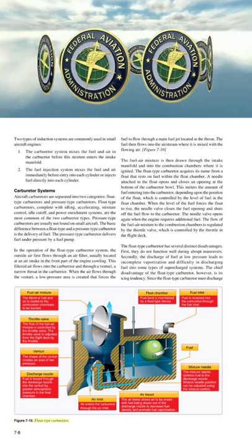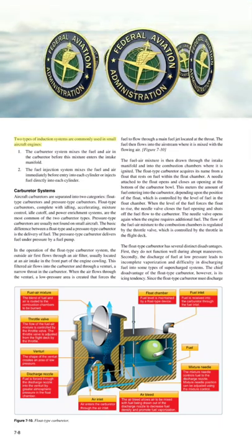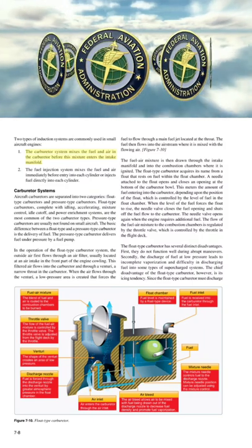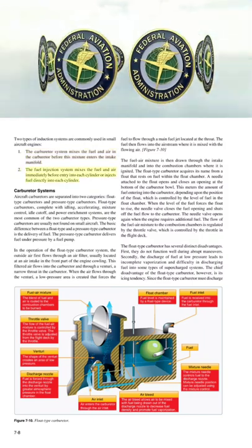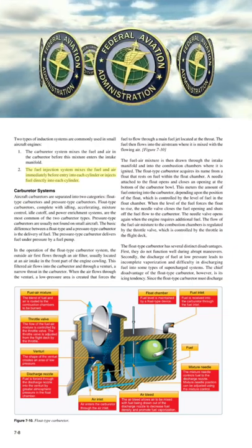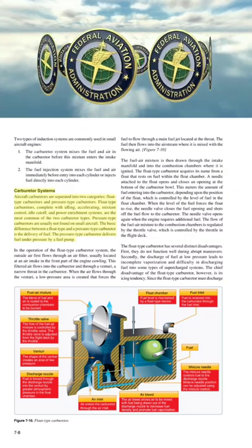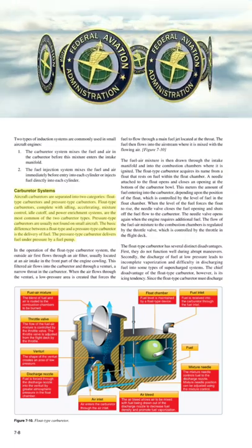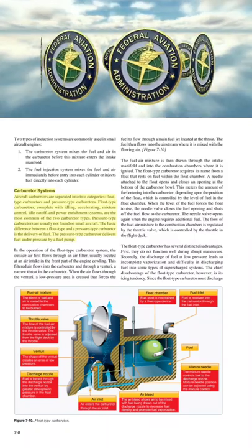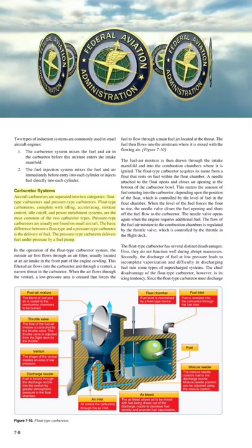Two types of induction systems are commonly used in small aircraft engines. The carburetor system mixes the fuel and air in the carburetor before this mixture enters the intake manifold. The fuel injection system mixes the fuel and air immediately before entry into each cylinder or injects fuel directly into each cylinder. Aircraft carburetors are separated into two categories: float type and pressure type. Float type carburetors are the most common of the two carburetor types. Pressure type carburetors are usually not found on small aircraft; the basic difference between them is the delivery of fuel — the pressure type delivers fuel under pressure by a fuel pump.